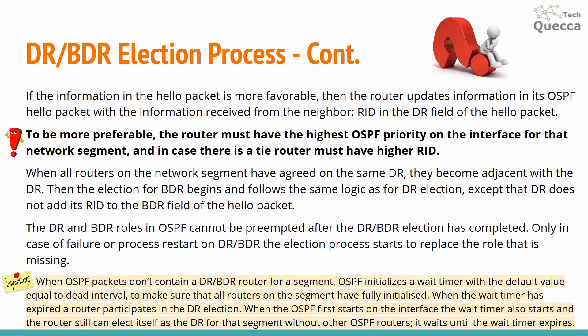The DR and BDR roles in OSPF cannot be preempted after the election has completed. Only in case of failure or process restart on DR or BDR does the election process start to replace the missing role. When OSPF packets don't contain a DR or BDR for a segment, OSPF initializes a wait timer with a default value equal to the dead interval to ensure all routers on the segment have fully initialized. When the wait timer expires, a router participates in the DR election. When OSPF first starts on an interface, the wait timer also starts, allowing a router to elect itself as DR even without other OSPF routers.